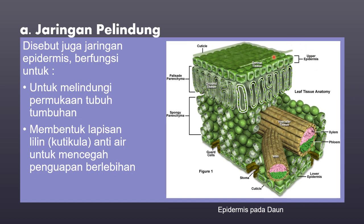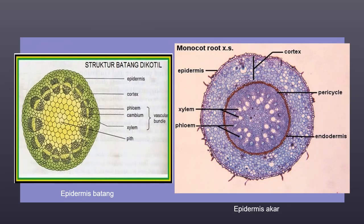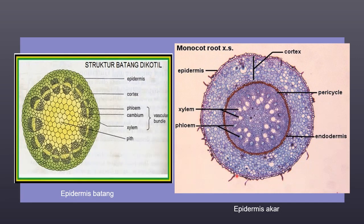Jaringan epidermis ini juga terdapat pada organ akar dan organ batang. Ini adalah gambar jaringan epidermis yang terdapat pada akar dan pada batang. Mana jaringan epidermis? Ini adalah jaringan epidermis — seperti yang ditunjukkan oleh panah ini, bagian satu lapisan sel yang paling luar yang membentuk lingkaran inilah yang disebut dengan jaringan epidermis. Pada batang tidak terdapat kutikula, jadi epidermis ini berfungsi sebagai pelindung jaringan yang ada di bawahnya. Gambar yang ini merupakan anatomi akar, dan bagian luarnya yang terdiri dari satu lapis sel inilah yang disebut dengan jaringan epidermis.